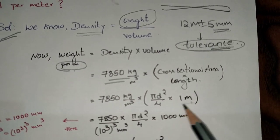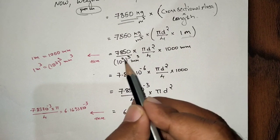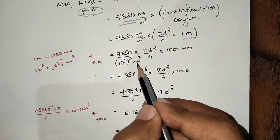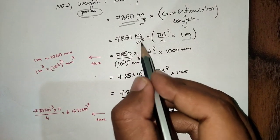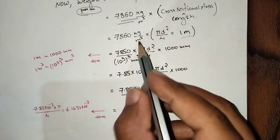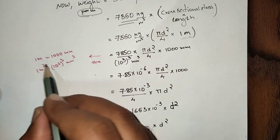Now 7850 by 10³ whole cube mm cube here. 10³ whole cube mm cube will become because we are converting meters into mm. 1 meter equals 1000mm. 1 meter cube equals 10³, which is (10³)³ mm cube.